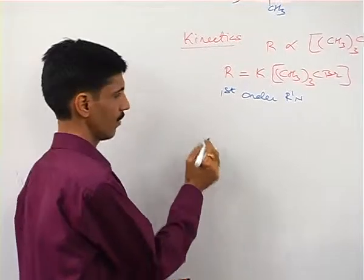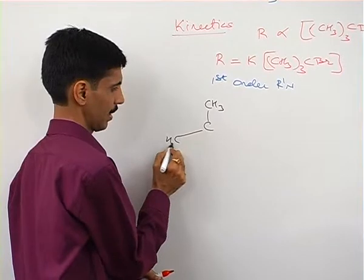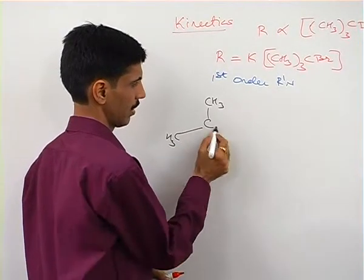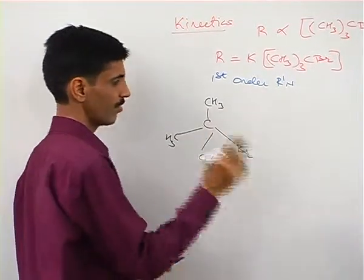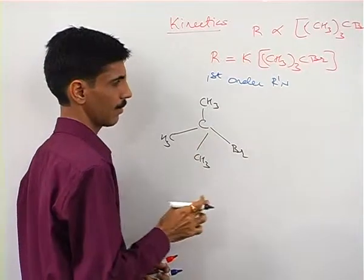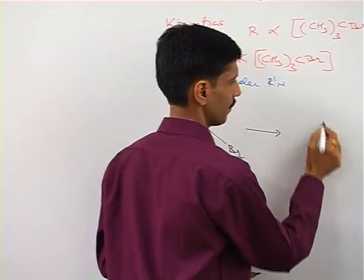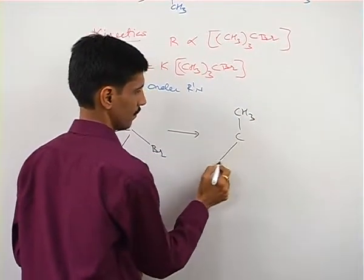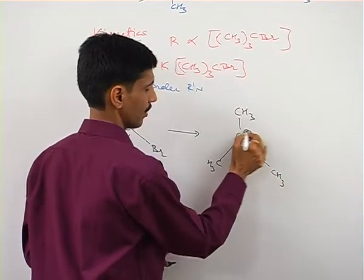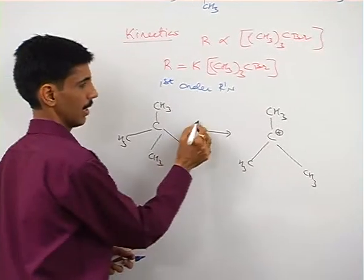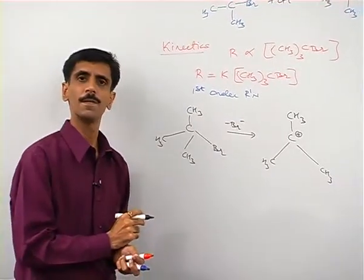So if you consider, in the first step, what will happen is: C with CH3, CH3 here, there is a CH3 over here, and there is Br over here. Now, the first step will involve the fission or the breaking of the CBr bond. And as a result of which, what is going to happen is, there will be a positive charge on the carbon. And this is going to result in the breaking of the Br minus bond.